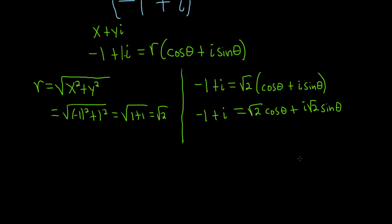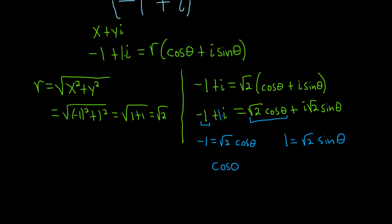Now we use the fact: what does it mean for two complex numbers to be equal? Two complex numbers are equal when the real parts are equal and the imaginary parts are equal. So negative one equals the square root of two times cosine theta, and one equals the square root of two times sine theta. Solving for each trig function: cosine theta equals negative one over the square root of two, and sine theta equals one over the square root of two.